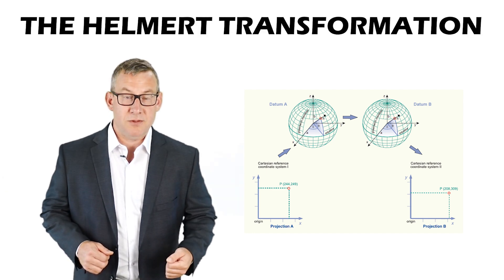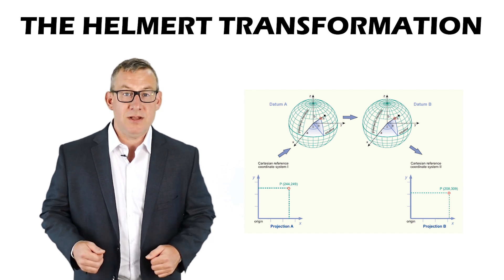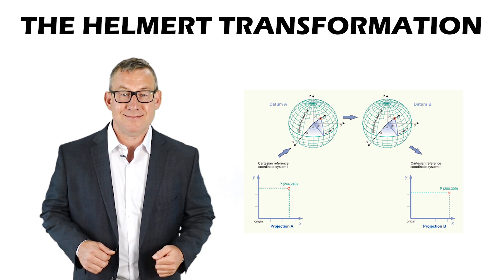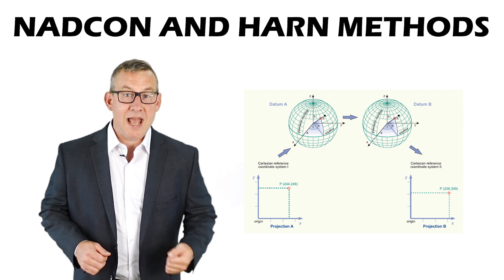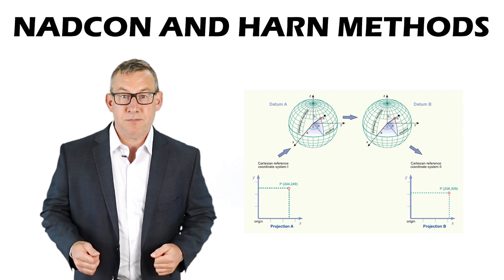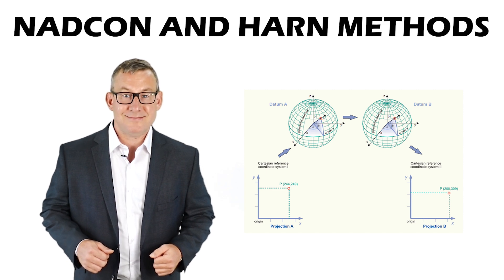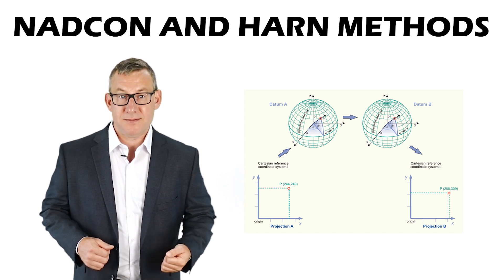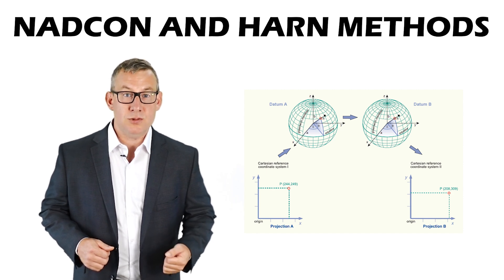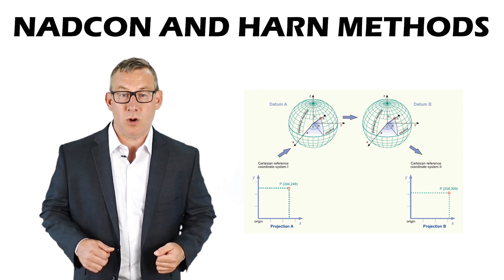The Helmert transformation is a datum transformation that uses 7 or 14 parameters. The NADCON and HARN methods are grid-based methods used by the United States. They divide the transformation area into cells and use control points from HARN, the High Accuracy Reference Network.